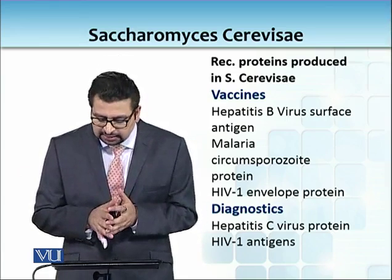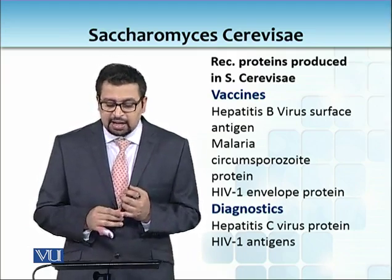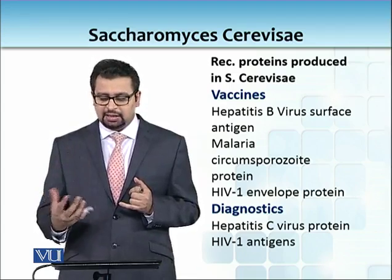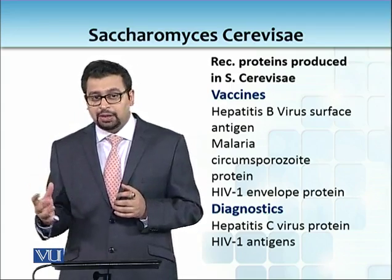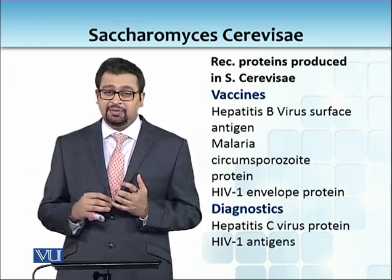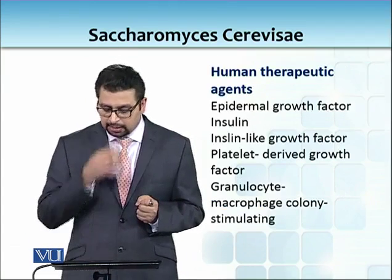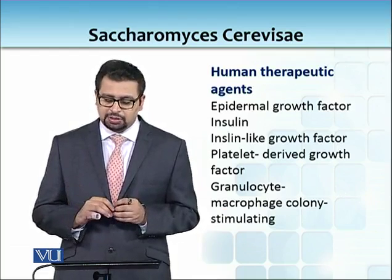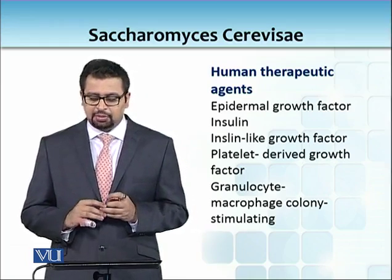There are several things to look at in terms of what we are currently producing in yeast. For example, in Pakistan, vaccines that are industrially produced are made in yeast. The malaria vaccine is produced in yeast. HIV-1 envelope protein is made in yeast. For diagnostics, HIV-1 antigens and Hepatitis C virus proteins found in different kits are all produced in S. cerevisiae. Most importantly, 50% of the world supply of insulin is currently being produced in S. cerevisiae, with the remainder in different systems. Similarly, insulin-like growth factor is also produced this way.